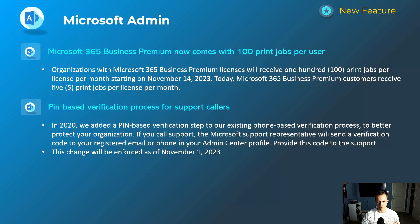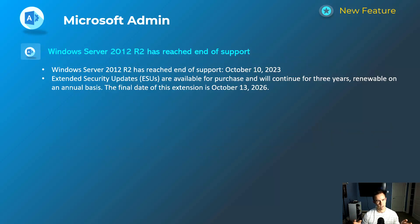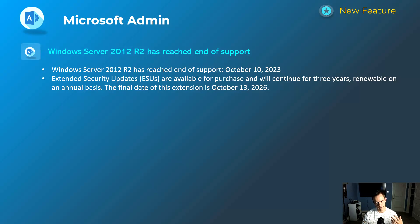Last announcement: Windows Server 2012 R2 has reached end of support. I know there are probably still many environments running this — I still saw a ton in the ecosystem during migrations. It reached end of support effective October 10th. Extended Security Updates (ESUs) are available for purchase through 2026, but I think the better course of action is to look at an upgrade path to Windows Server 2022. Definitely check this out if you have any of these in your ecosystem.